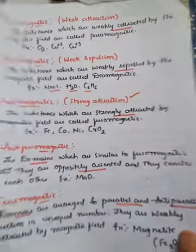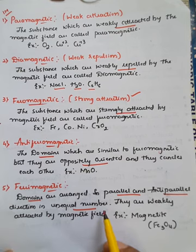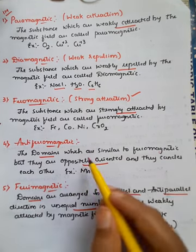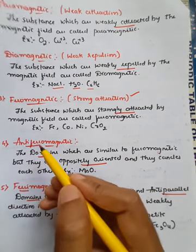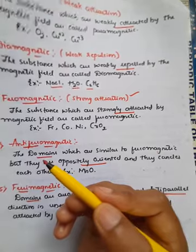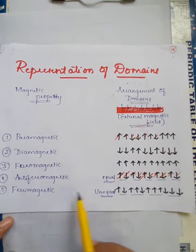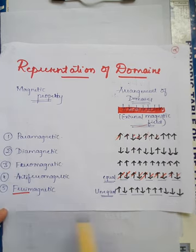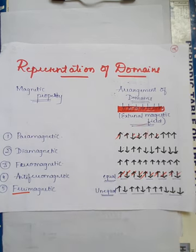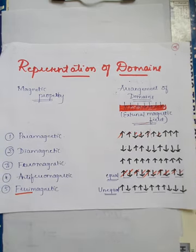In ferrimagnetic, the domains are arranged in parallel and anti-parallel directions but in unequal numbers. When equal in number it is antiferromagnetic; when unequal in number it is ferrimagnetic. Understand the difference: ferromagnetic means all show attractive force towards external magnetic field; antiferromagnetic means equal numbers parallel and anti-parallel cancel each other; ferrimagnetic means unequal numbers in parallel and anti-parallel arrangement, so they do not fully cancel. Some show clockwise spin, some anti-clockwise spin. This is the overall representation of domains in magnetic properties of solids.